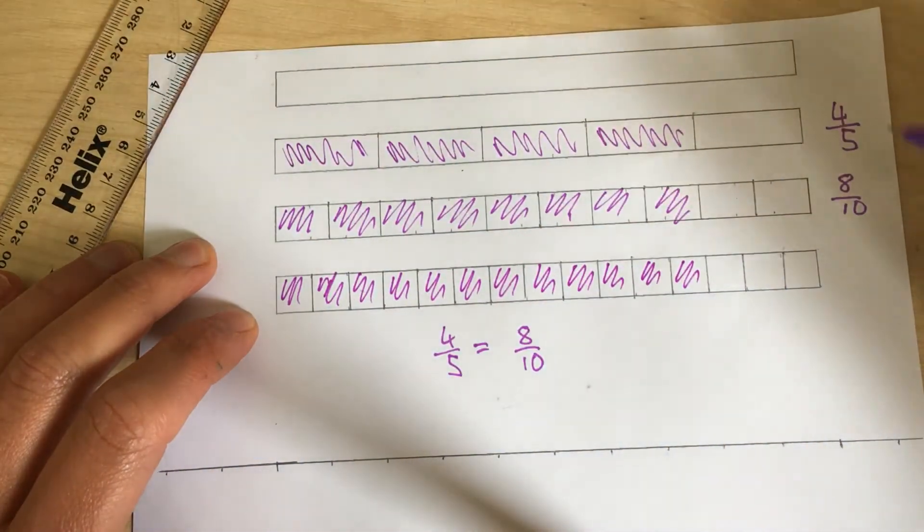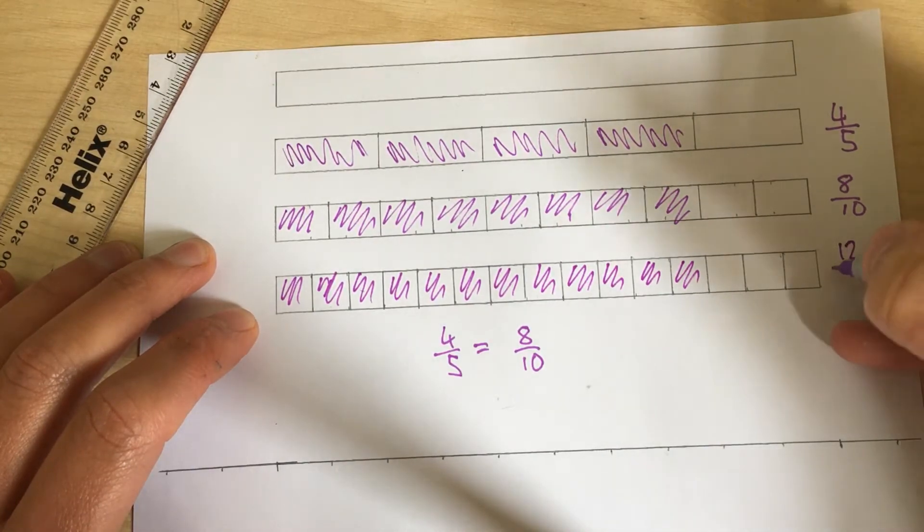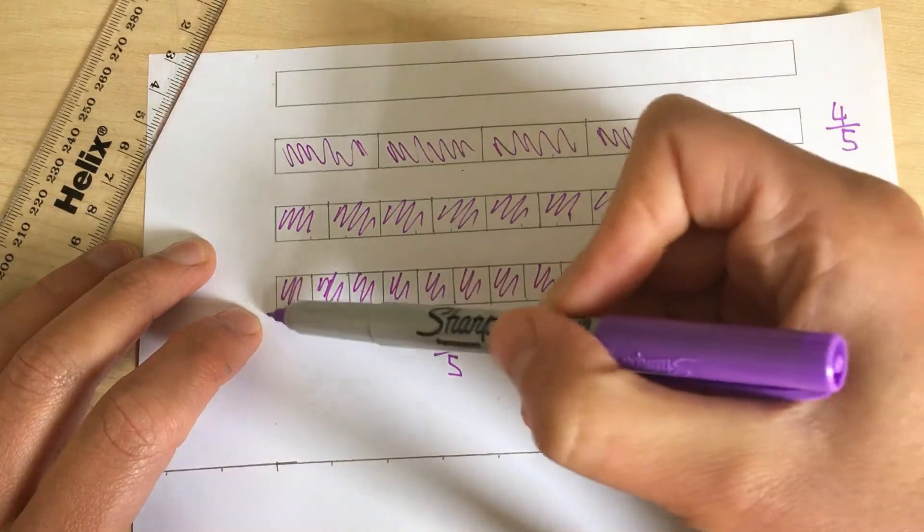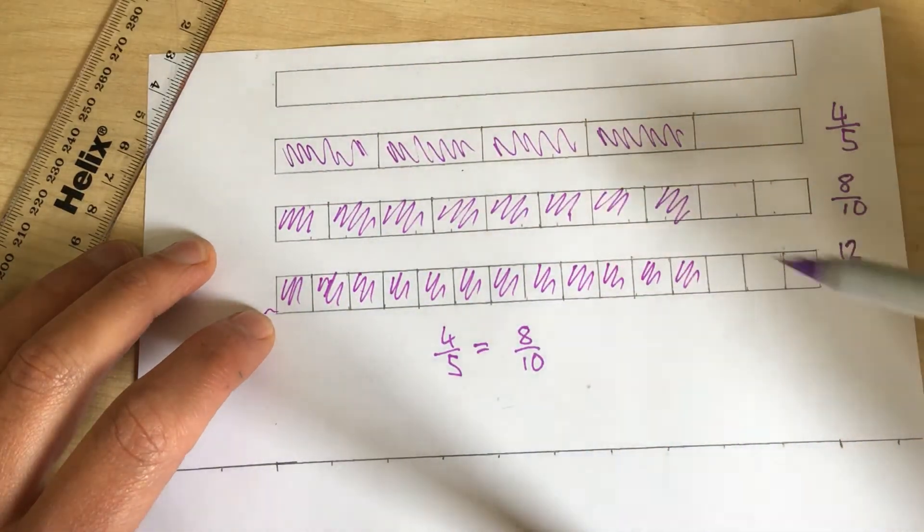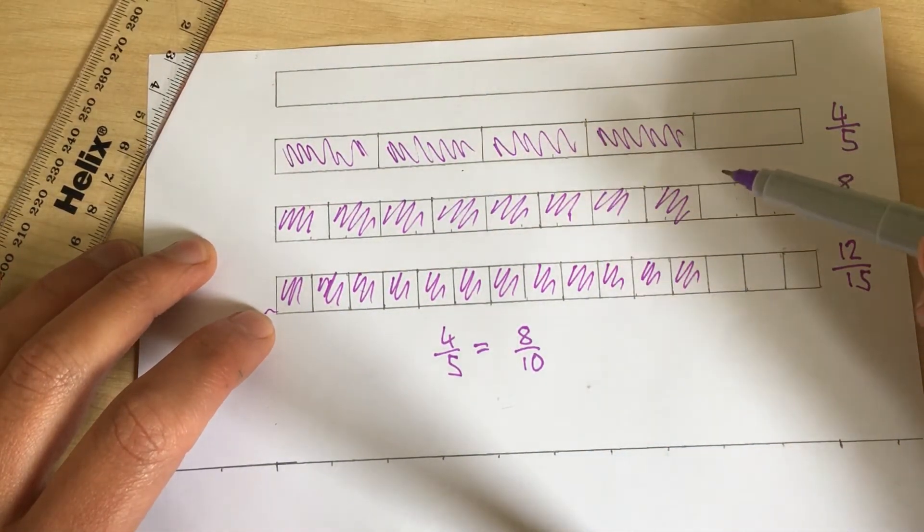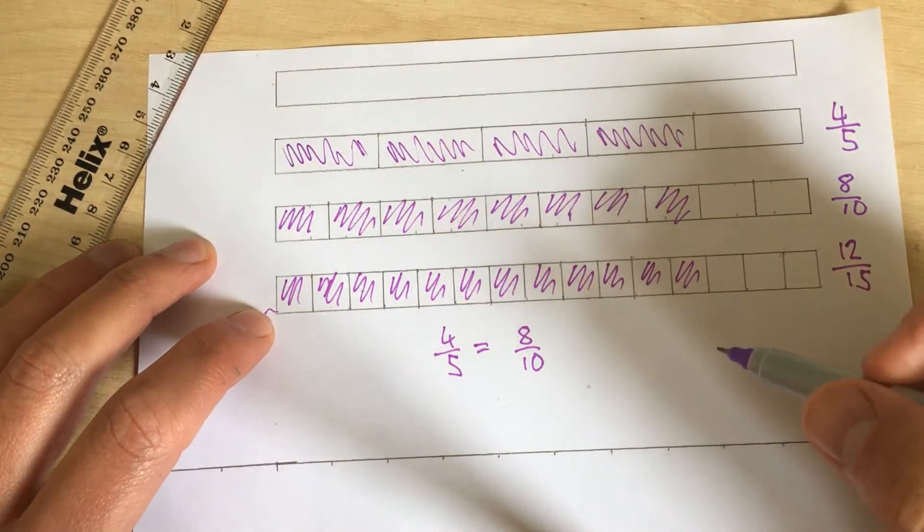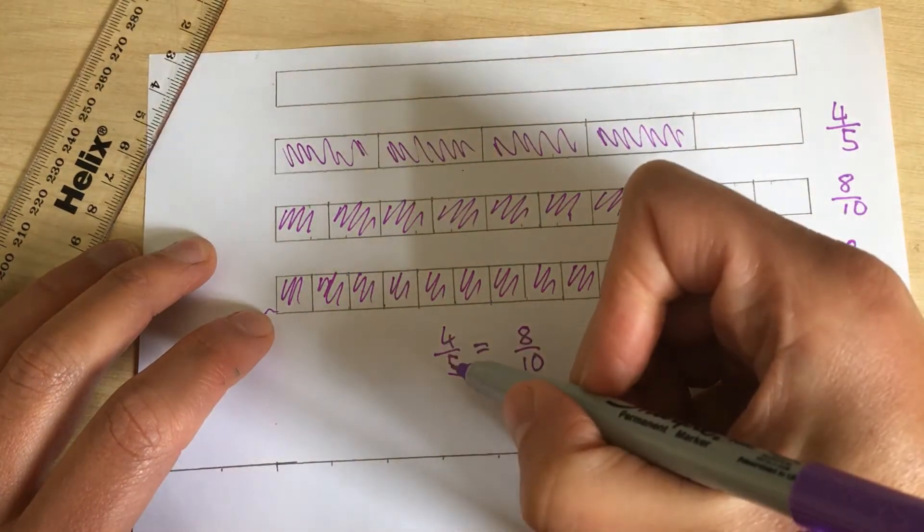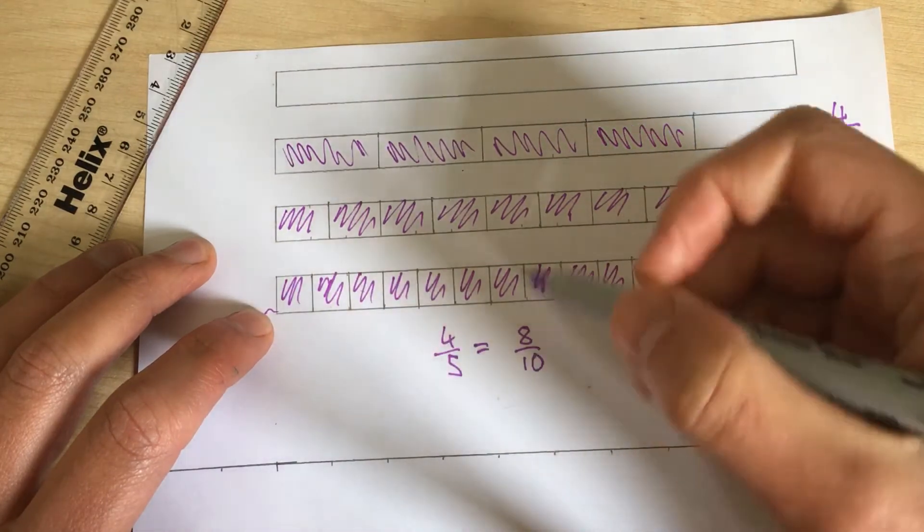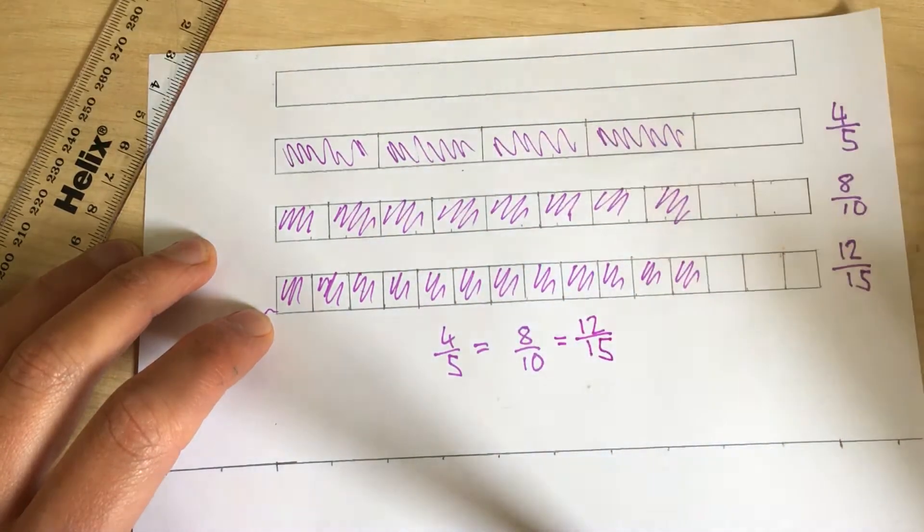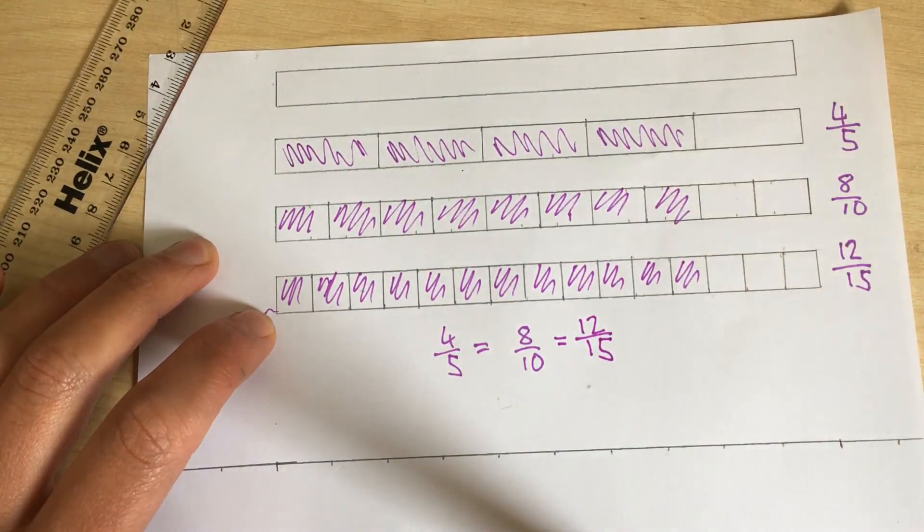This bar represents 12 out of 15. But can you see, again, it's the same length as the other two. So four fifths also equals 12 fifteenths. So here I can write four fifths equals eight tenths equals 12 fifteenths. They have the same value.